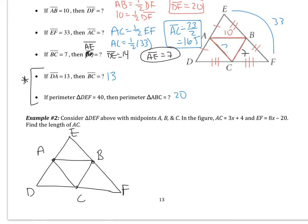So here's what I'm told. I'm told that AC is 3X plus 4, and that EF is 8X minus 20. Most students when they do this problem immediately want to say that 3X plus 4 equals 8X minus 20. Well, does AC even look like it's the same length as EF? No, so don't set them equal.